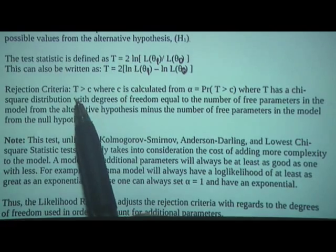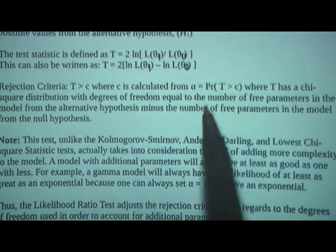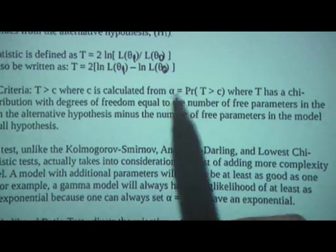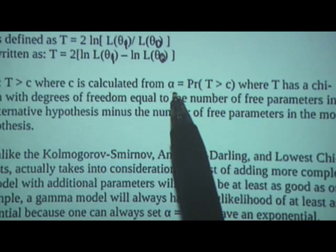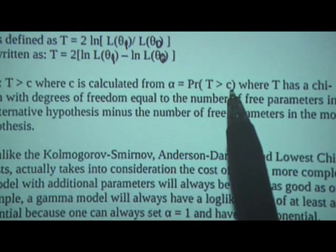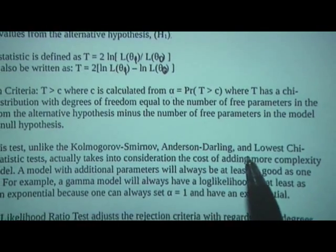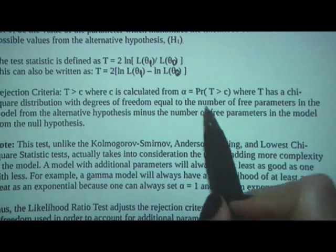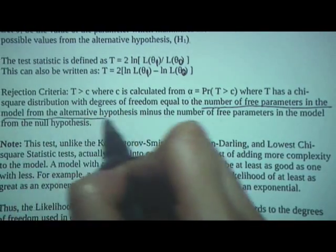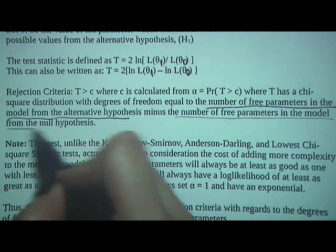The rejection criterion is when your test statistic T is greater than value C. Alpha is given — typically 5% or 10% — and C comes from the chi-square distribution tables, where the degrees of freedom equal the number of free parameters in the alternative hypothesis minus the number of free parameters in the null hypothesis.